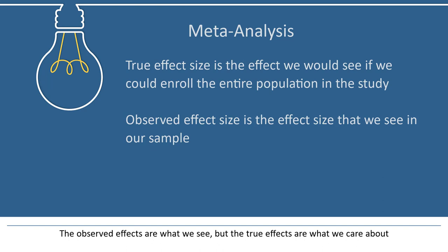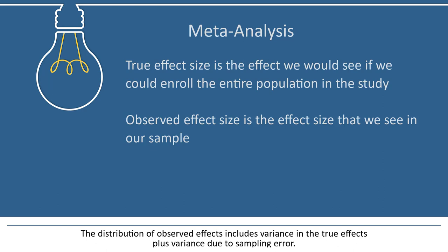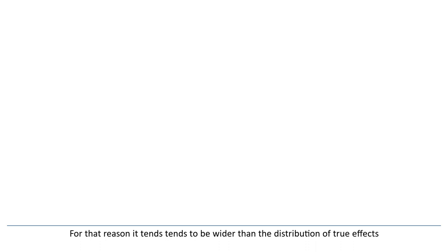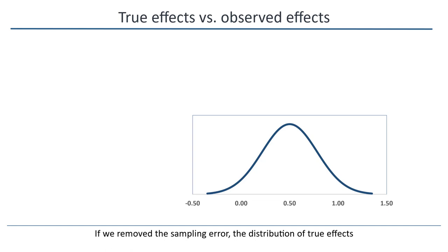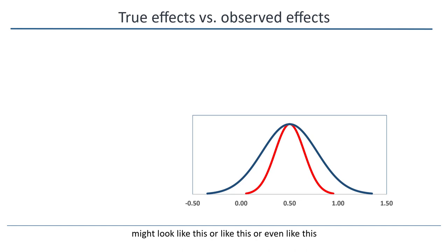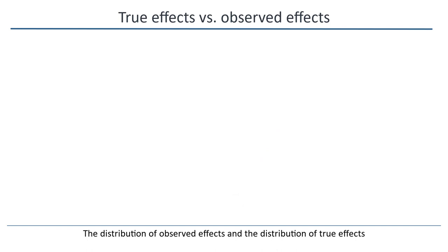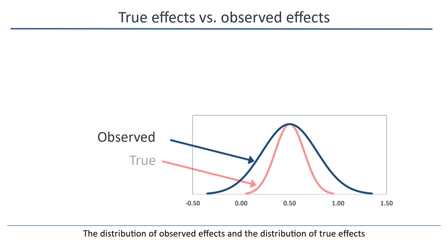The observed effects are what we see, but the true effects are what we care about. The distribution of observed effects includes variance in the true effects plus variance due to sampling error. For that reason, it tends to be wider than the distribution of true effects. In the ADHD analysis, if we could plot the distribution of observed effects, it would look something like this. But part of that is real, while part of it is sampling error. If we removed the sampling error, the distribution of true effects might look like this, or like this, or even like this. The key point is that we're working with two different distributions — the distribution of observed effects and the distribution of true effects — and the first tends to be wider than the second.